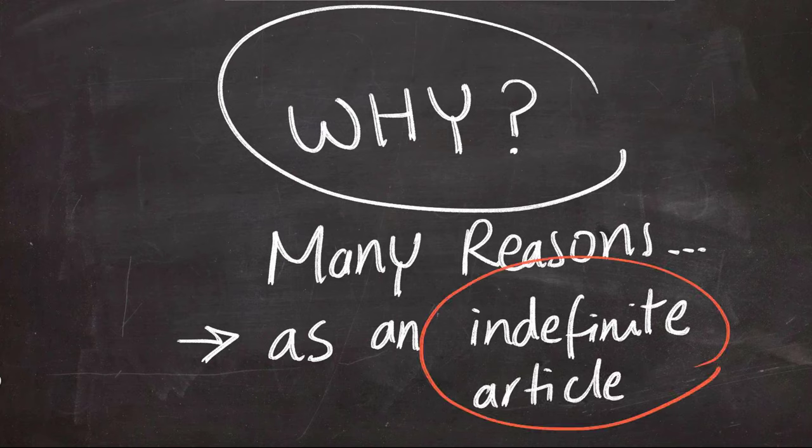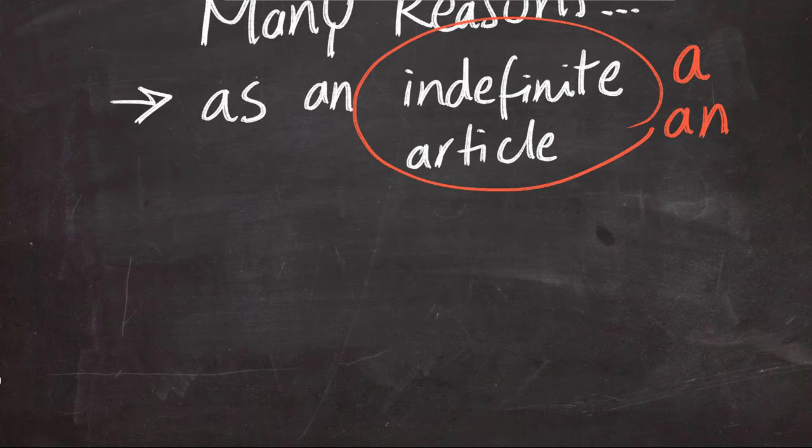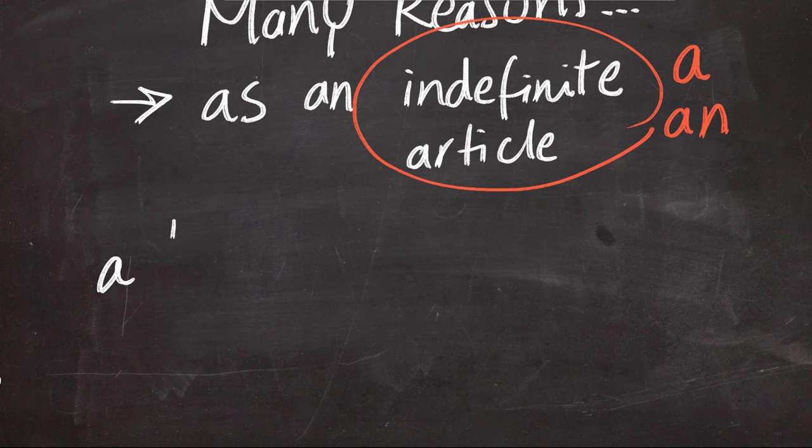Indefinite articles in English, for example, are A and An. So instead of using A and An in English, we use Tanween in Arabic.